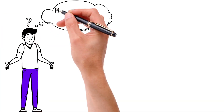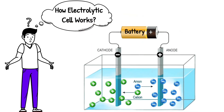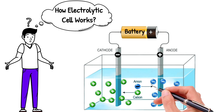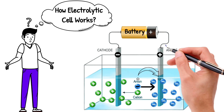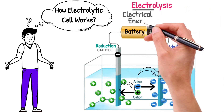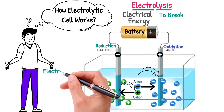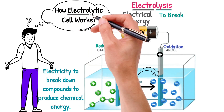When electric current is applied from the battery, the ions in the electrolyte migrate to their respective electrodes. The anions, which are negatively charged, move towards the positively charged anode and lose their electrons — thus oxidation takes place at the anode. The cations, which are positively charged, move towards the negatively charged cathode, gain electrons, and reduction takes place at the cathode. The process that takes place in an electrolytic cell is called electrolysis — 'electro' means electrical energy and 'lysis' means to break — so electrolysis uses electricity to break down compounds and produce chemical energy.